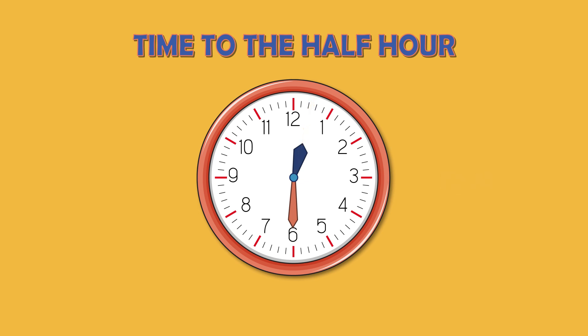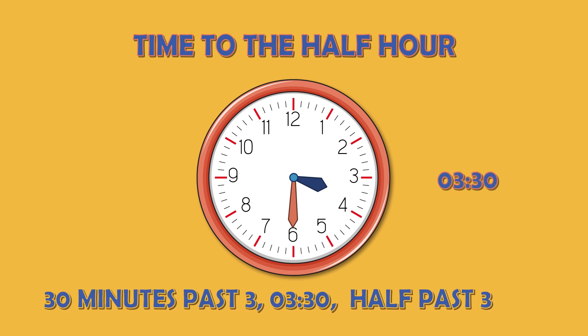If we wanted to show 3:30, the hour is 3 and the minutes are 30, but it's halfway between 3 and 4 o'clock. So our hour hand needs to be halfway between 3 and 4. This shows 3:30. The hour is in the hour of 3 and 30 minutes past, so we could say 30 minutes past 3, 3:30, or half past 3.